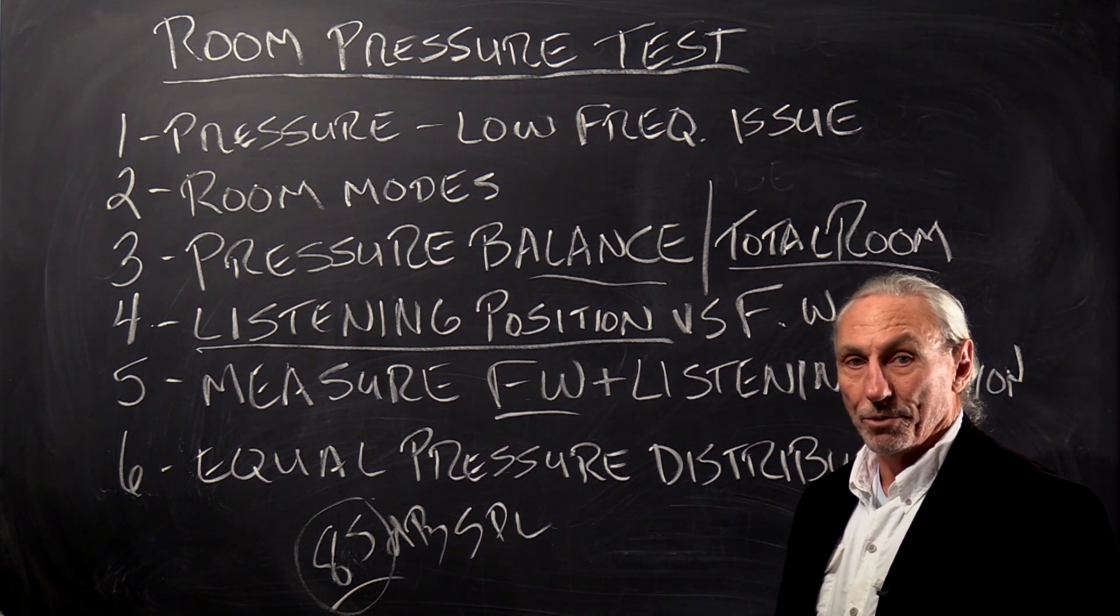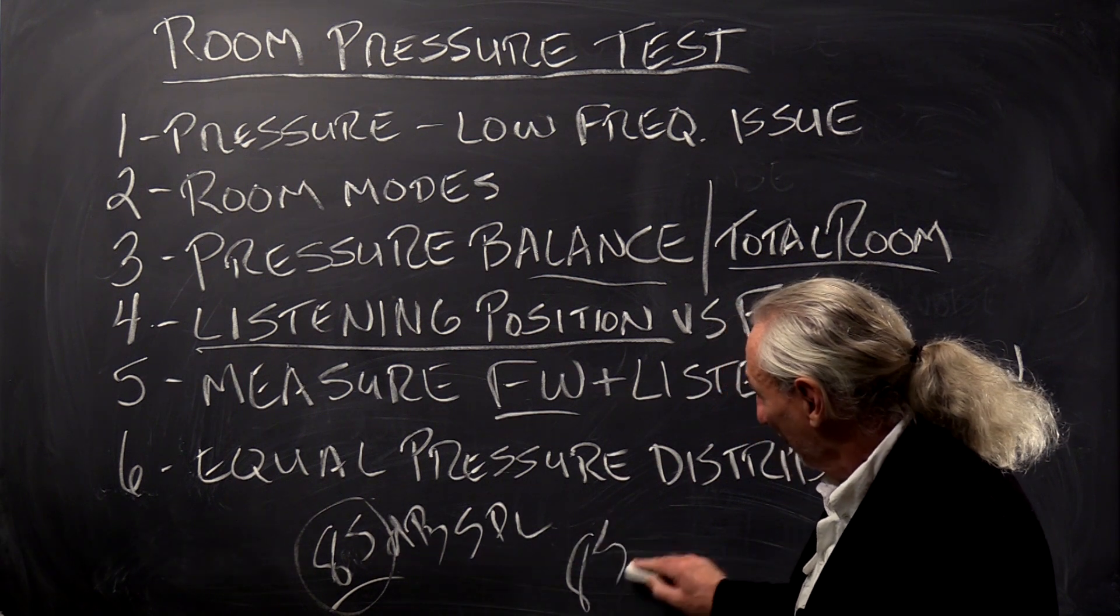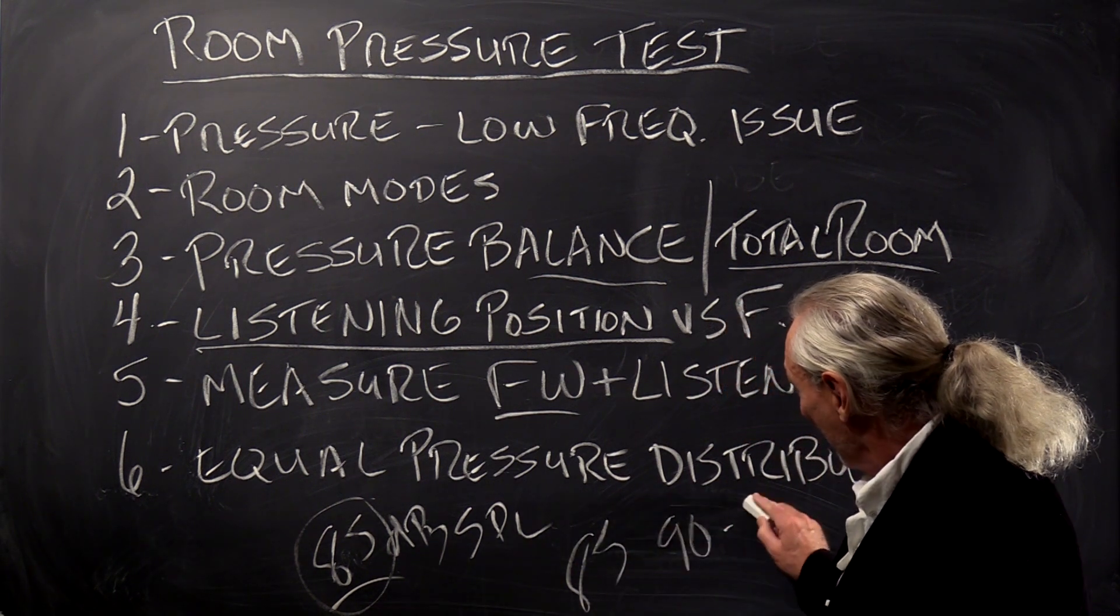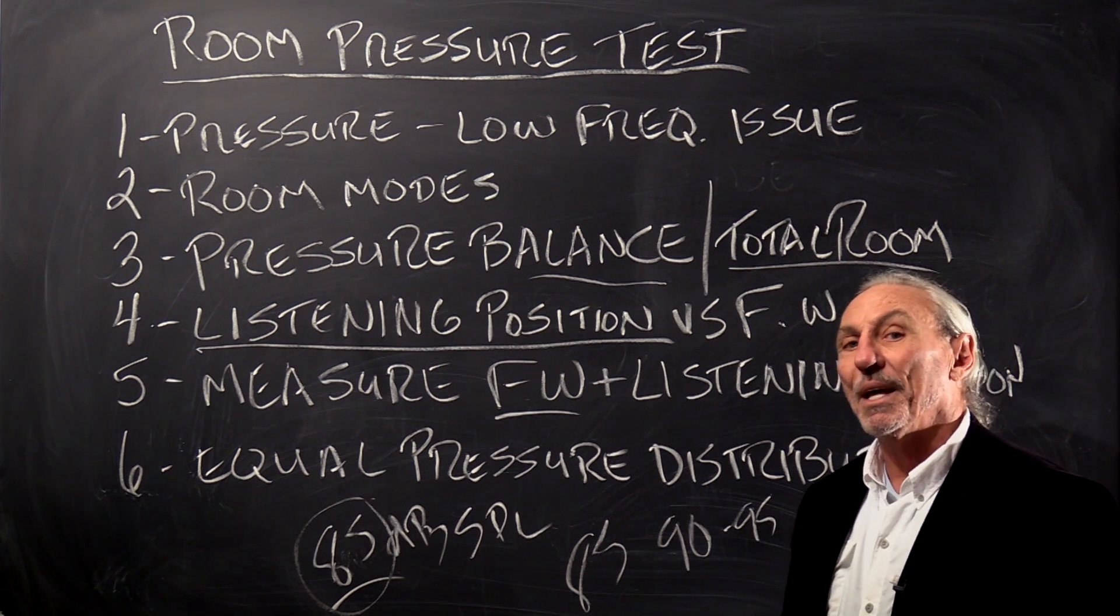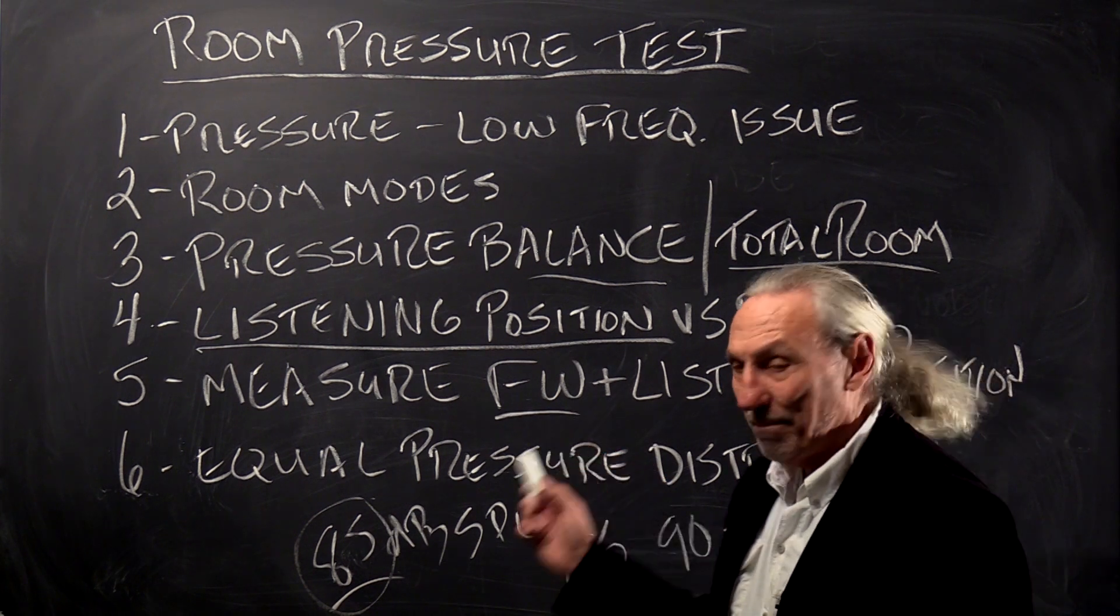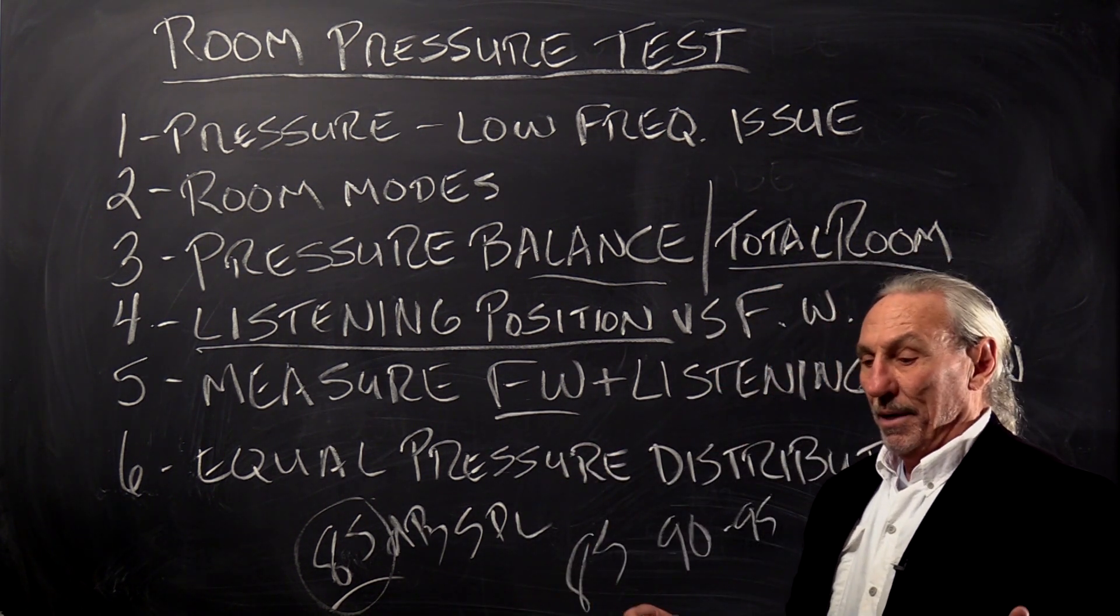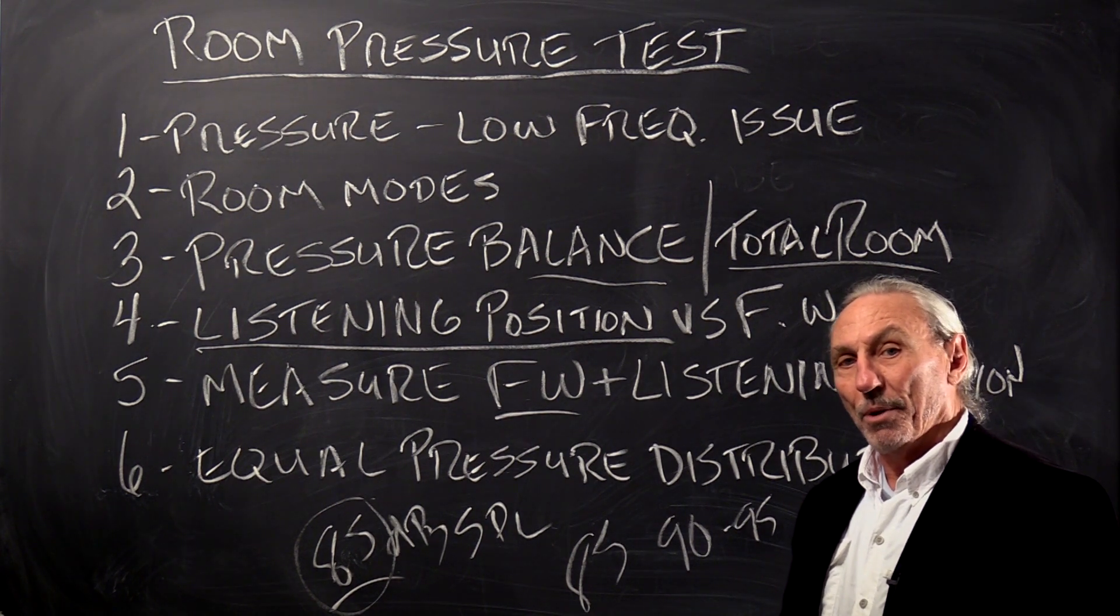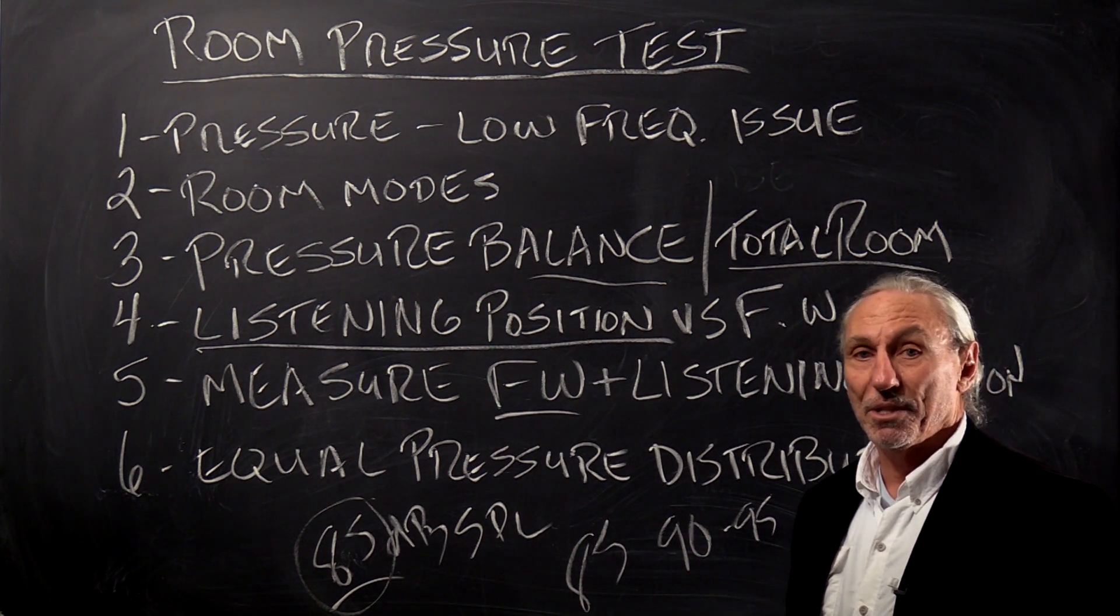You won't find that in most rooms. What you'll find is 85 dB SPL at the listening position, you might find 90 to 95 behind the speakers because you haven't treated that area for low frequency management. So you want to have balance in your room. You don't want to have one part of your room full of unwanted low frequency pressure and another one that has none, especially at the listening position.